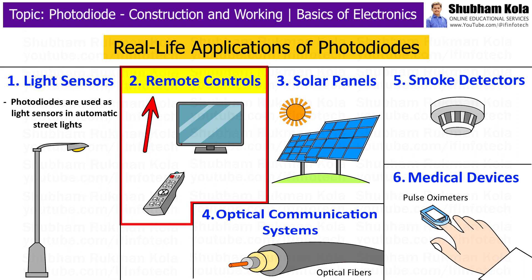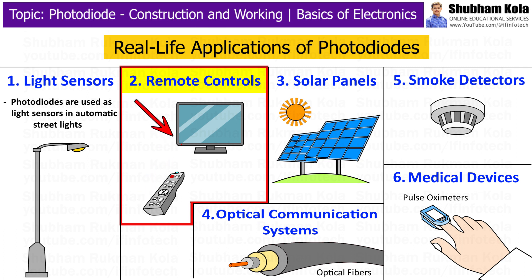The second application is remote controls. The remote controls you use for your TV, air conditioner, and other devices have a photodiode inside. When you press a button on the remote, it sends an infrared signal to the device. The photodiode in the device receives the signal and converts it into an electrical signal, which the device then interprets as a command to change the channel, adjust the volume, or perform other actions.